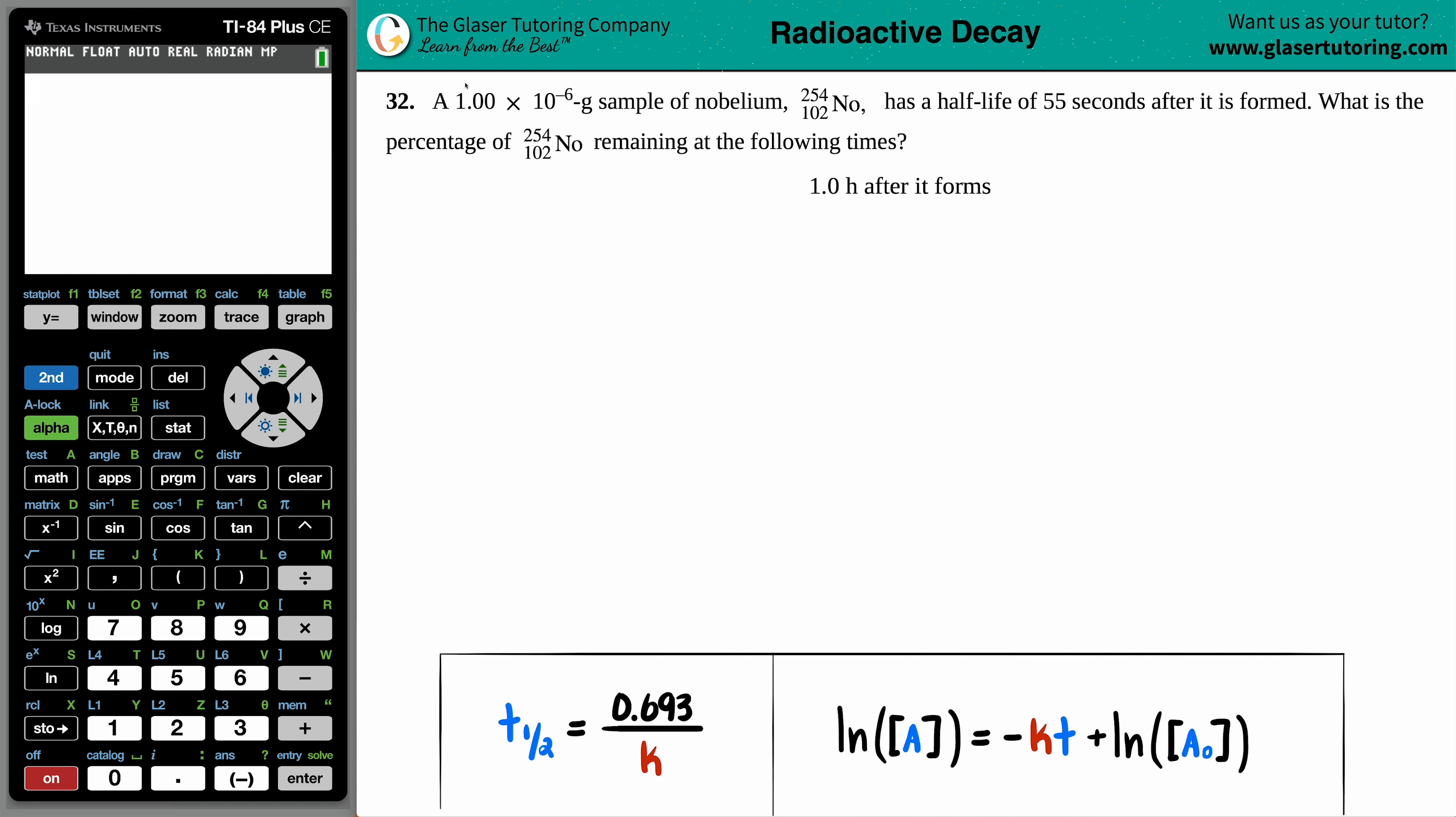Number 32: A 1.00 times 10 to the negative 6 gram sample of nobelium - nobelium with a mass number of 254 - has a half-life of 55 seconds after it was formed. What is the percentage of the nobelium-254 remaining at the following times, and we have to find out what's going on at 1.0 hours after it forms.